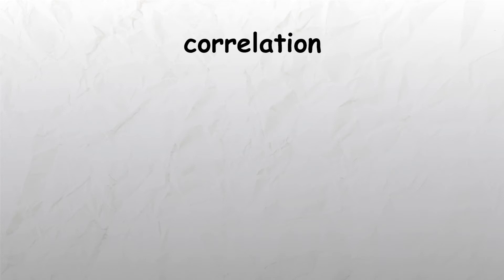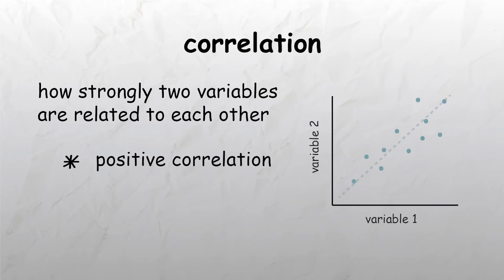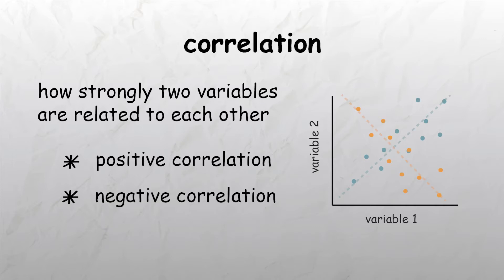Correlation refers to a measure of how strongly two or more variables are related to each other. A positive correlation means that high values of one variable are associated with high values of the other, while a negative correlation means that high values of one variable are associated with low values of the other. If there is no correlation between two variables, they are said to be uncorrelated.